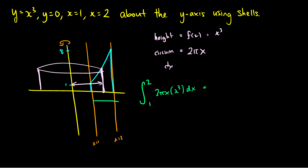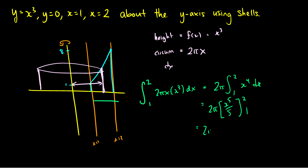We can simplify by pulling out 2π and taking the integral from 1 to 2 of x⁴ dx. The antiderivative is 2π · [x⁵/5] from 1 to 2. Plugging in: 2⁵ = 32, so we get 2π · (32/5 − 1/5) = 2π · (31/5) = 62π/5.